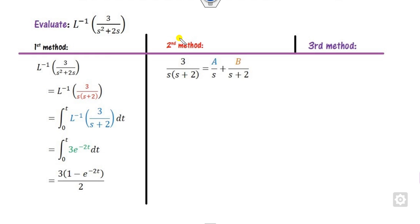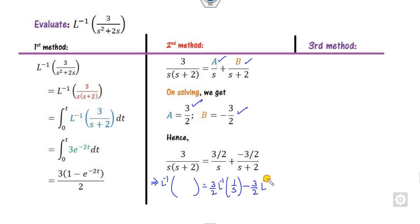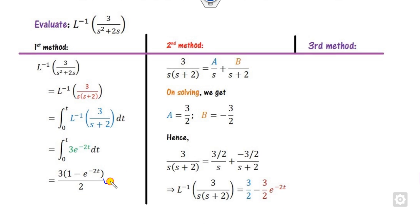The second way is to use partial fractions. Write 3/(s(s+2)) as A/s plus B/(s+2). Solving gives A = 3/2 and B = -3/2. Substituting and taking the Laplace inverse on both sides: 3/2 is outside for 1/s, and -3/2 is outside for 1/(s+2). The Laplace inverse of 1/s is 1, and of 1/(s+2) is e^(-2t). Both methods give the same answer.